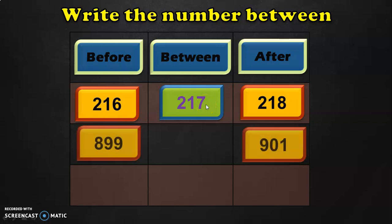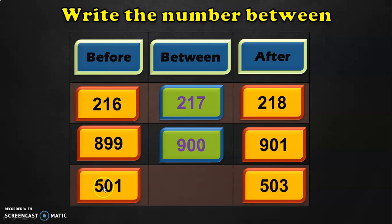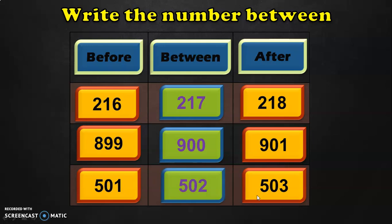Let us do the next example. Write the number that comes between 899 and 901. After 899 it is 900, and 900 is one less than 901. So between 899 and 901 we have 900. Let us do the last example: what is the number that comes between 501 and 503? The answer is 502.